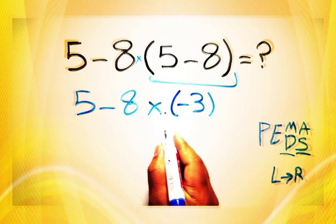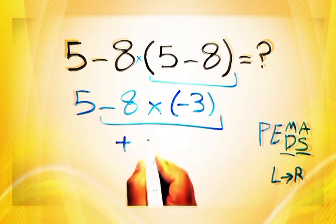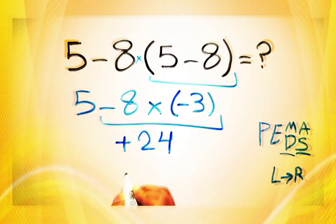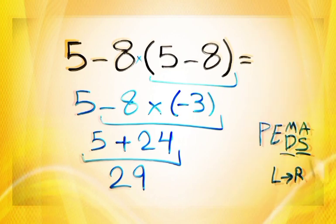Negative eight times negative three gives us positive twenty-four. So we have five plus twenty-four which gives us twenty-nine. And this is our final answer to this problem. The correct answer is twenty-nine.